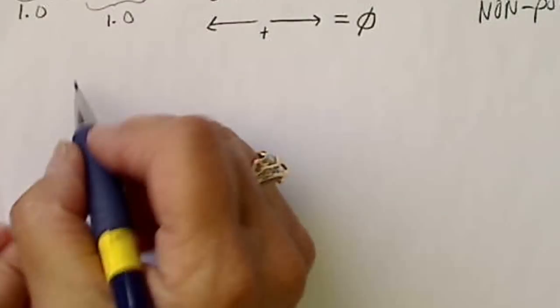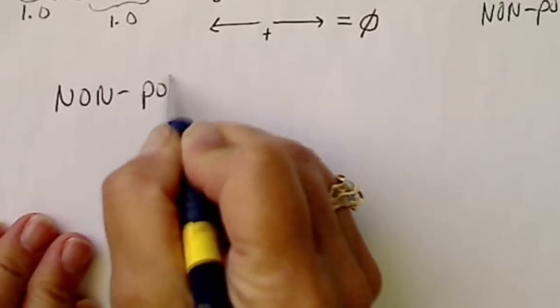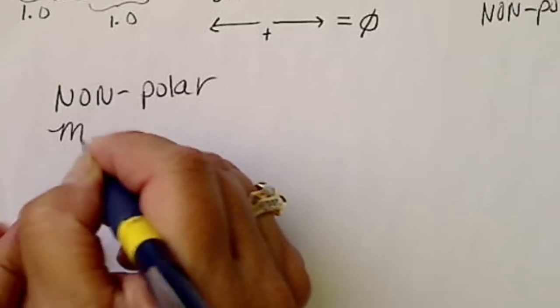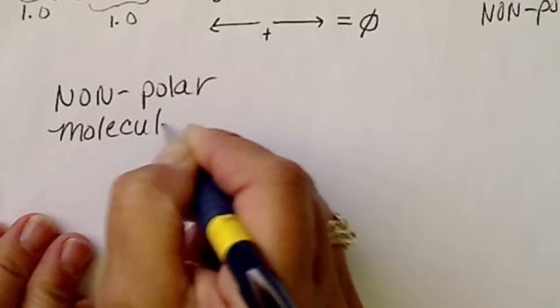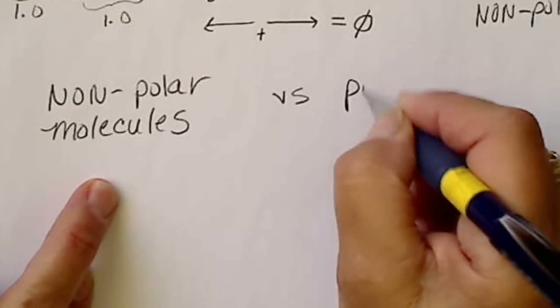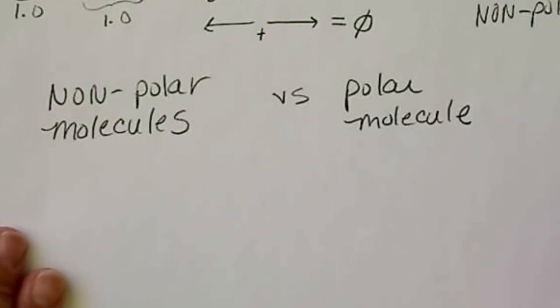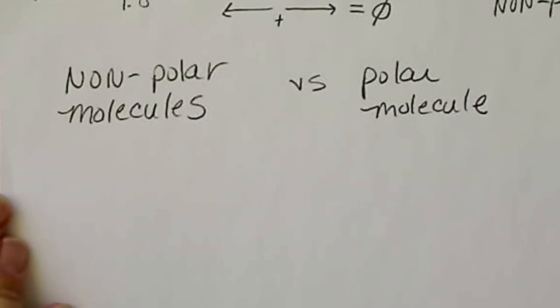If we look at some examples, nonpolar molecules - this is not talking about a bond, but an entire molecule versus polar. We can tell by drawing a dot structure if it's going to be lopsided.